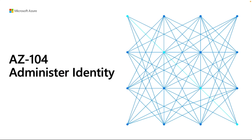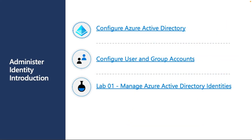Today I plan to cover the topic for exam code AZ-104, Microsoft Azure Administrator. This series will include all content related to the AZ-104 exam, and each part will be uploaded to my YouTube channel. First, we will cover the Azure Administrator identity module, which includes configuring Azure Active Directory, user and group accounts, and managing Azure Active Directory.